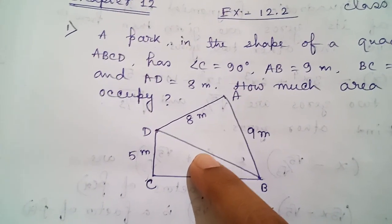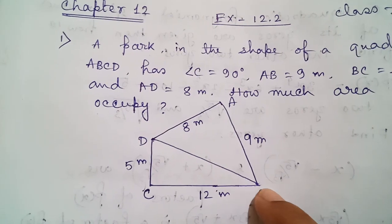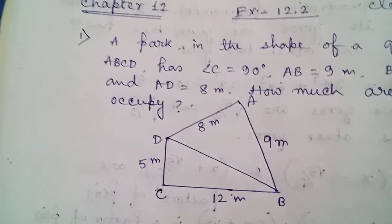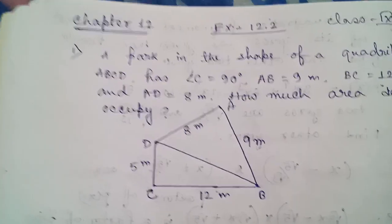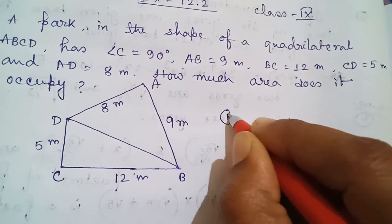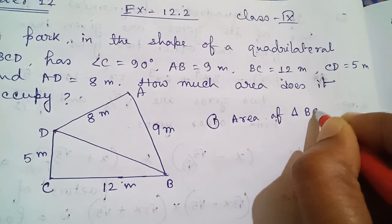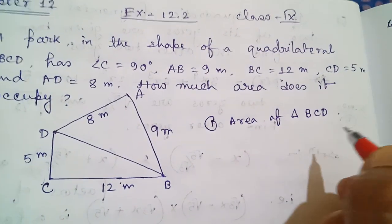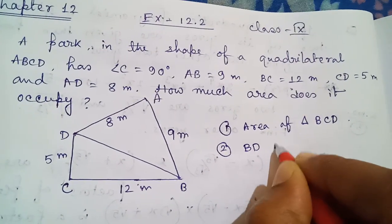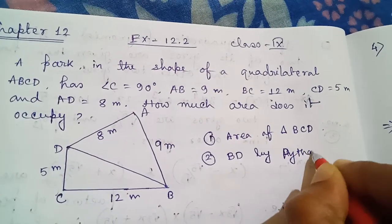BD we can find out by Pythagoras' law from this triangle. So the steps are: number one, find the area of triangle BCD; number two, find BD by Pythagoras' law.